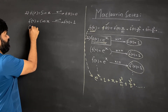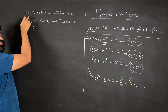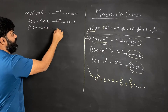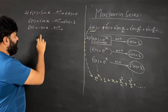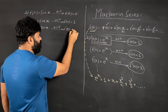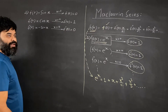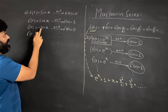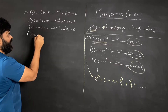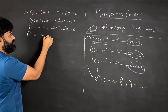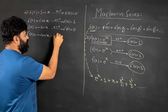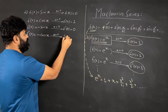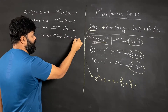Differentiating again, f double dash of x — the derivative of cos x is negative sin x. Putting x equal to 0, sin 0 is 0, so f double dash of 0 is 0. For the third derivative, f triple dash of x: the derivative of negative sin x is negative cos x. Putting x equal to 0, cos 0 is 1, so f triple dash of 0 is negative 1.